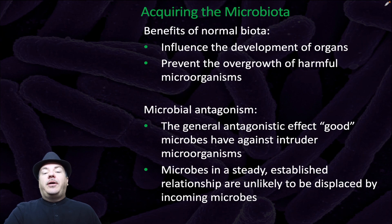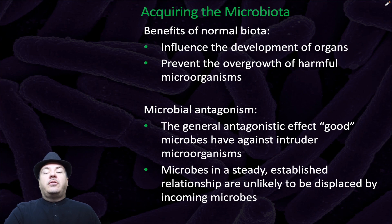The benefits of the normal biota include influencing the development of organs and preventing the overgrowth of harmful microorganisms. There's also microbial antagonism — the general antagonistic effect good microbiomes have against intruder microorganisms. Microbes in a steady established relationship are unlikely to be displaced by incoming microbes.